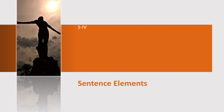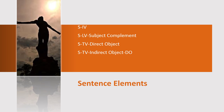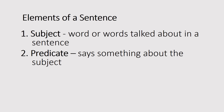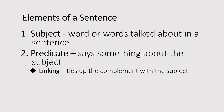Knowing the parts of your sentence, let's now go to the other sentence elements. Apart from the subject and predicate, you also have the subject complement, the direct object, the indirect object, the object complement, and adverbial modifiers. The verbs are really important in determining the basic sentence pattern because they govern the intention of the sentence.